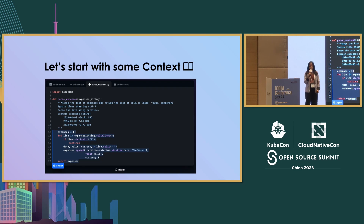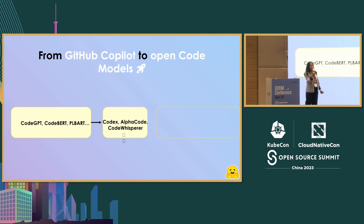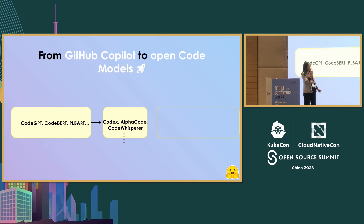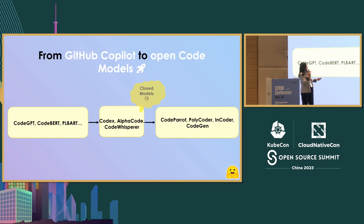When we talk about code generation models, you probably think of GitHub Copilot first, which is the VS Code extension that can complete your code. Looking at the code generation space, before Codex there were some models which were kind of small and weren't very strong at code generation. Then Codex was released by OpenAI, then DeepMind released AlphaCode, and then Code Whisperer. Very exciting things were happening in this space.